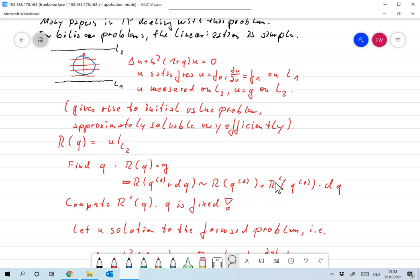So now what I need is the derivative of R with respect to Q at the point QL. So I need to come up with some linearization, at least I need to come up with some linearization. So what I would like to do is I would like to compute that R prime of Q for Q fixed, and that we will do now.